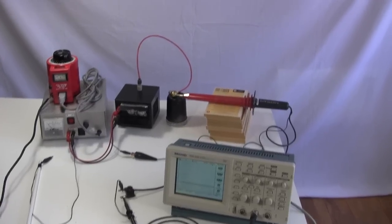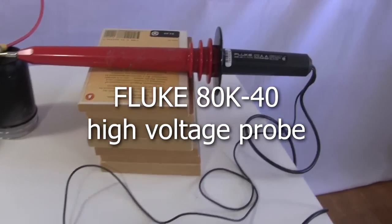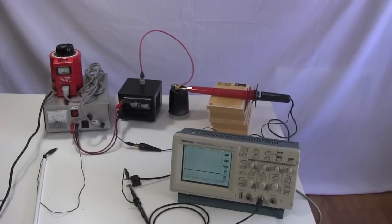Here I'd set it up so I could see what the output voltage looks like when there's no load. I put the tip of my Fluke high voltage 80k-40 probe against the power supply's output and connected it to my oscilloscope.